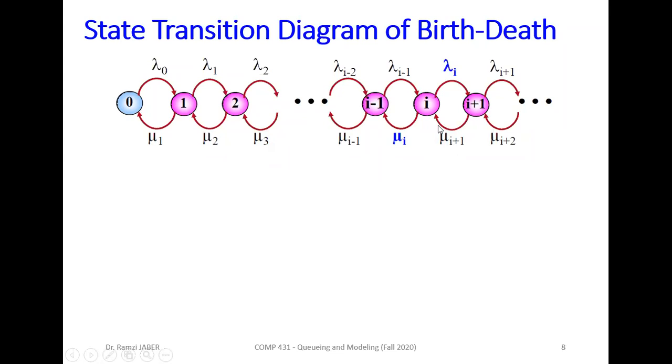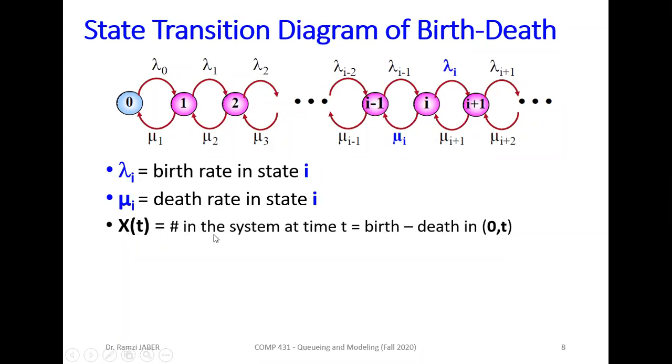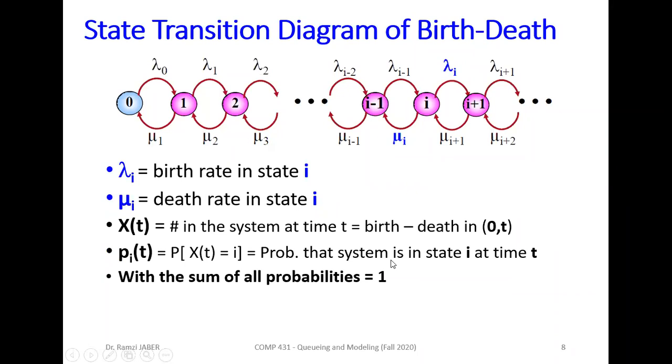Till i, you get mu_(i+1), and from i to i-1, mu_i. So lambda_i is called birth rate in state i. Lambda_i, birth rate in state i, to get i+1 with rate lambda_i. Mu_i is death rate. You are at node i, mu_i will be death rate in state i. So focus on this node. X(t), the number in the system at time t, which equals birth minus death in 0 to time t. So the probability P_i(t) will be equal to probability of X(t) equal i at node i, which is probability of the system in state i at time t. The same as before.